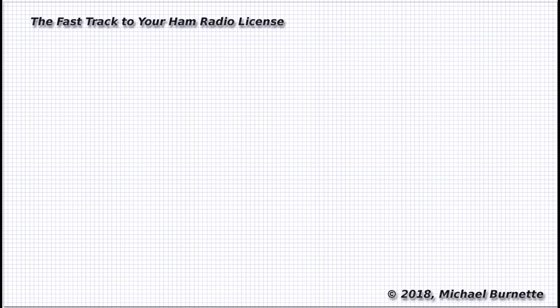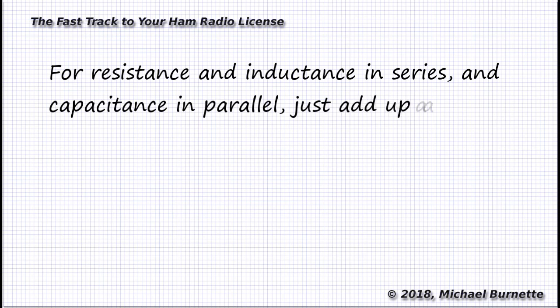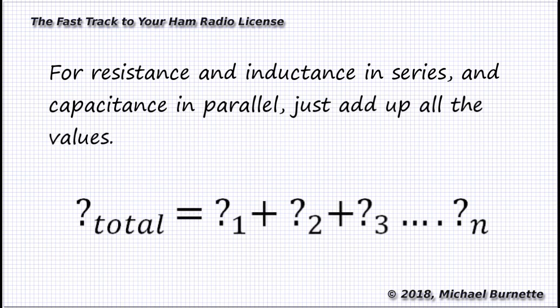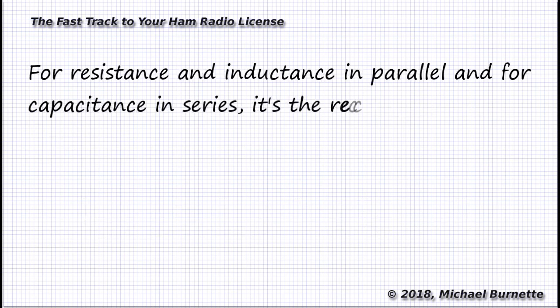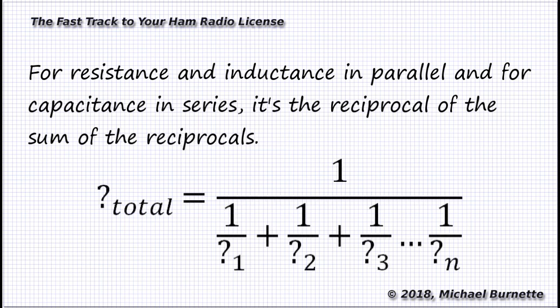So to review, for resistance and inductance in series, and for capacitance in parallel, the generic formula to remember is something number one plus something number two plus something number three until you run out of somethings. Just add them up. For resistance and inductance in parallel, and for capacitance in series, the generic formula is that reciprocal of the sum of the reciprocals. One over one over something plus one over something else, etcetera, etcetera, until you run out of somethings.